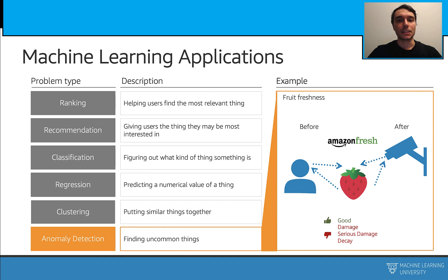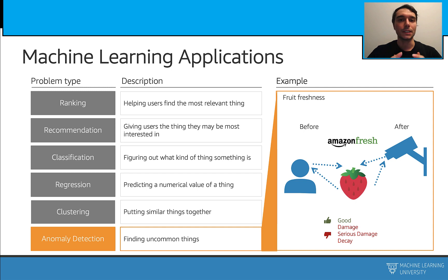With anomaly detection, we usually deal with some uncommon things — we tend to try to find them. For example, there is this example about fruit freshness from Amazon Fresh, where we try to find some decayed or damaged products.